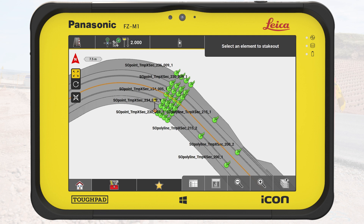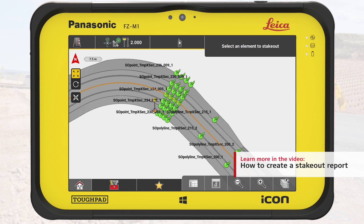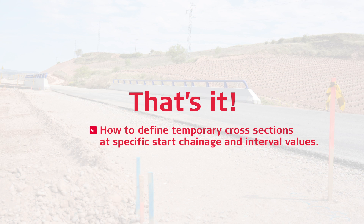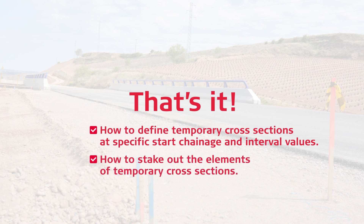Now we could generate a stakeout report to hand it over to the project leader. By the way, you may also want to see the video on how to create a stakeout report. It is also possible to use the temporary cross-sections in combination with the tool for auto-element selection. You have learned how to define temporary cross-sections at specific start chainage and interval values. You have also learned how to stake out the elements of the temporary cross-section.